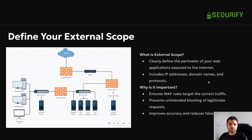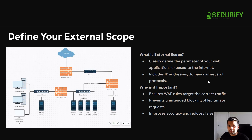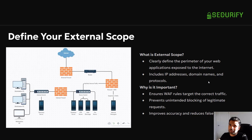Tip number one: define your external scope. In WAF configuration audits, I've often seen people miss configuring many external endpoints that should have been included. First, you do not want to leave out any externally-facing endpoint that isn't configured in WAF. Collect all your external endpoints, IP addresses, and whatever assets you can identify for your business.